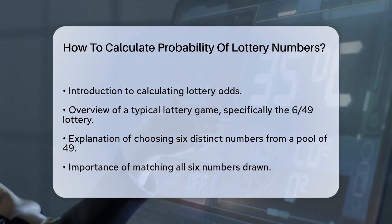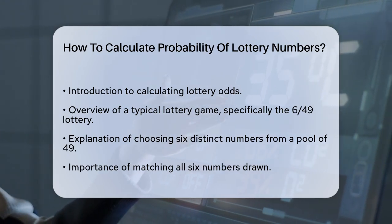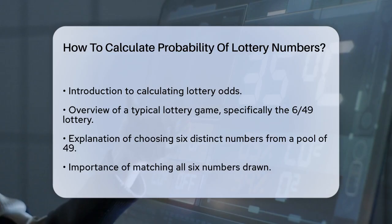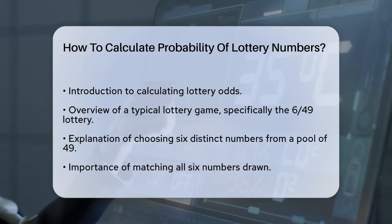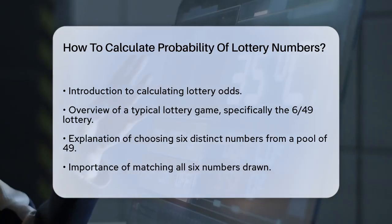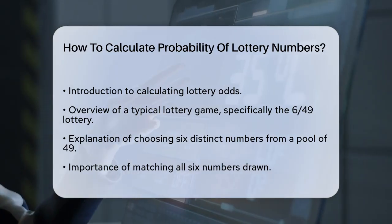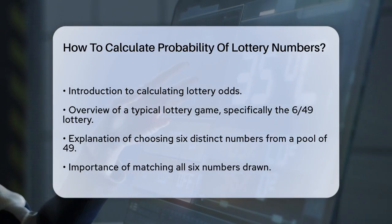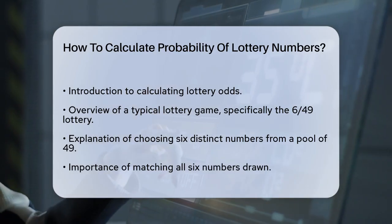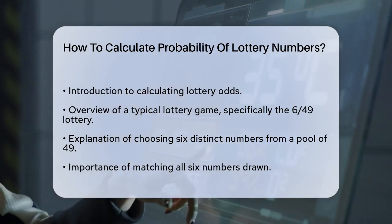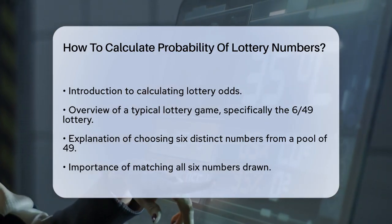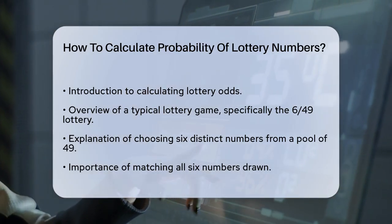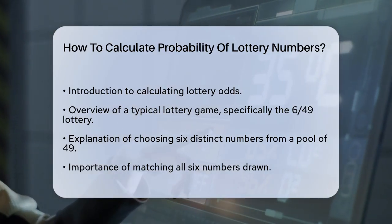To calculate the probability of winning, we use a concept called combinations. A combination tells us how many ways we can choose a certain number of items from a larger set, without considering the order.